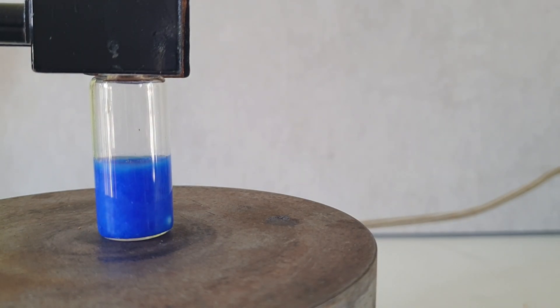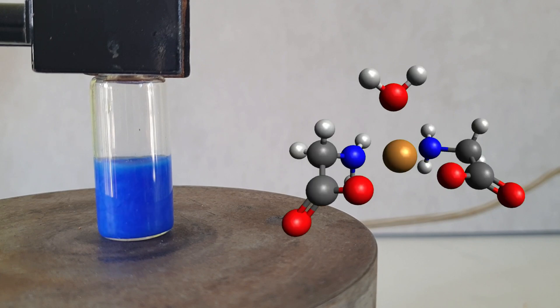In reality, though, the complex looks more like this, and this is the usual geometry of a five-coordinate copper-2 complex, and this geometry is called square pyramidal.